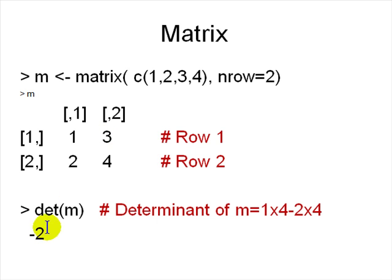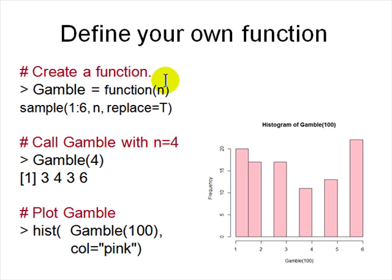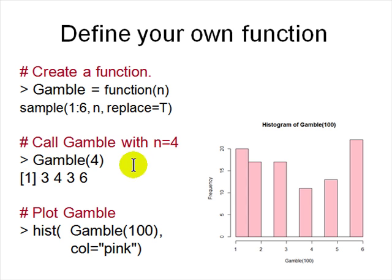You can create your own functions. We'll go into more detail in later lectures, but here's a quick example. Define 'gamble <- function(n) { sample(1:6, n, replace=TRUE) }'. After defining it, call it immediately — no compilation needed. 'gamble(4)' returns four dice rolls. You can also plot it: 'hist(gamble(100), col="pink")' shows a histogram of 100 dice rolls.